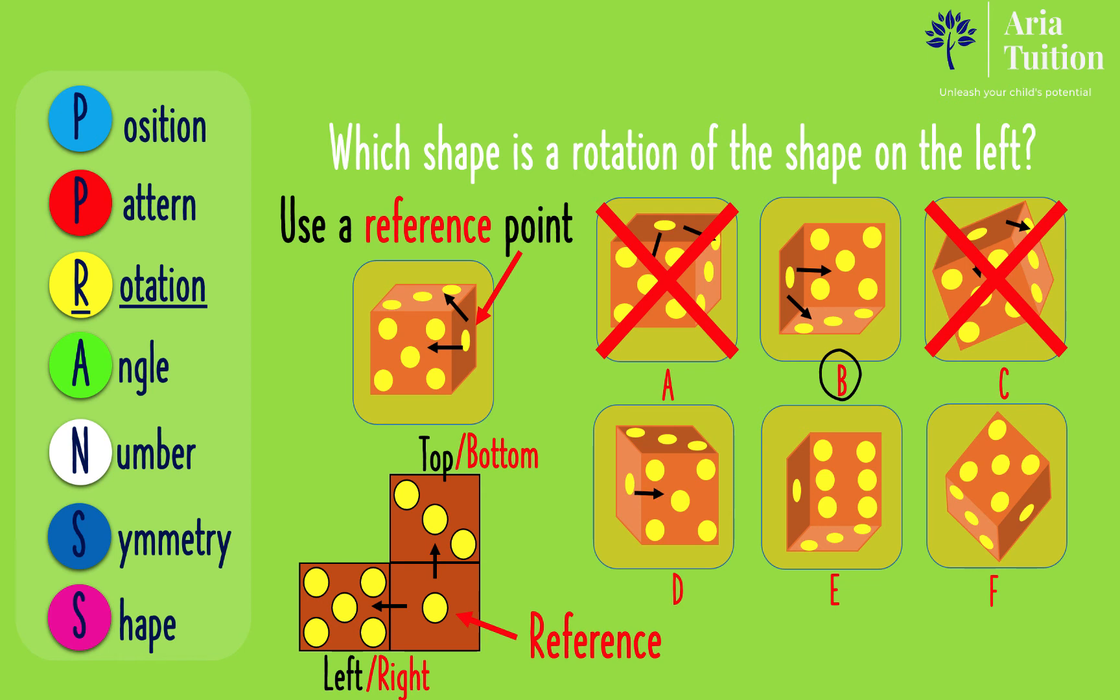In option D, five dots are to the right and three dots are on top. So option D is not the correct answer. Option E is not correct, as there are six dots, which are not shown on the shape on the left.